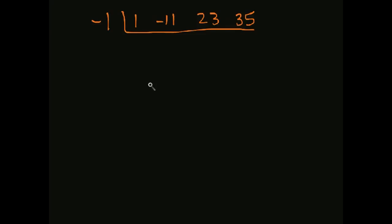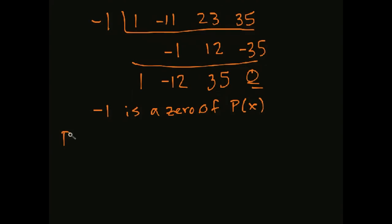All right, let's test another one. So I'll try negative one next. I usually like to try some of the simpler ones first, just to see if I can rule anything out right away. So I'll bring down that one, multiply, get negative one. So here I get negative 12. Here I get positive 12. When I add those together, I get 35. Negative 35, add those together, I get zero. So that means negative one is a zero of p(x). So that means we can write p(x) as (x - (-1)) times the quotient, and that's x² - 12x + 35.